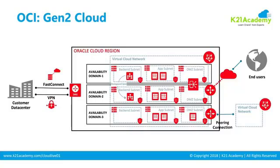Within an Availability Domain, you can create something called a Virtual Cloud Network, or VCN — shown as the dotted line in the diagram. Within the VCN, you can create subnets — for example, a backend subnet, an app subnet, and a DMZ subnet. This is pretty much the same as what you do on-premises; you do everything the same on the cloud as well. A subnet basically divides the network and provides security around it.